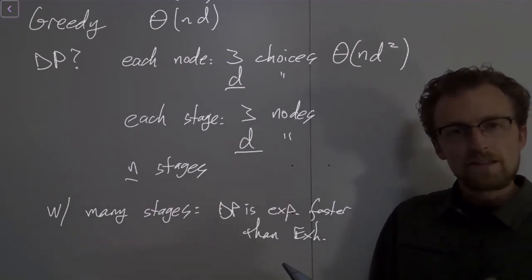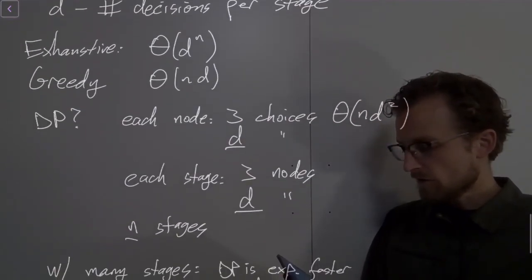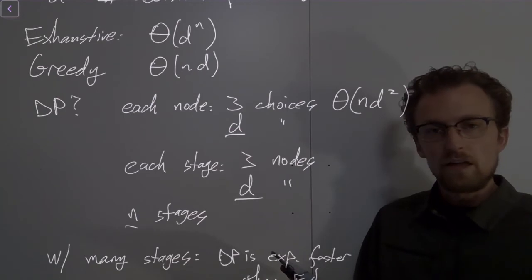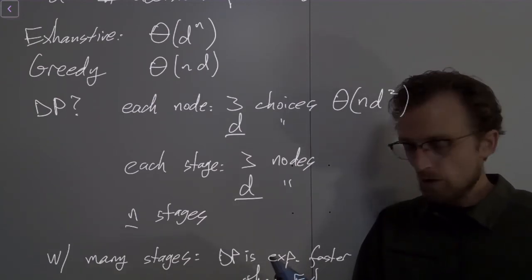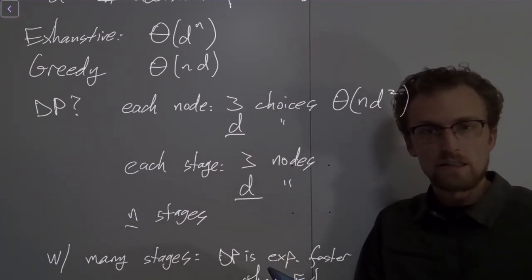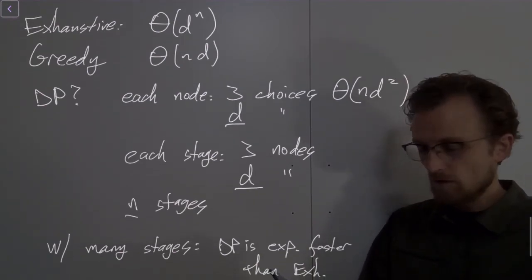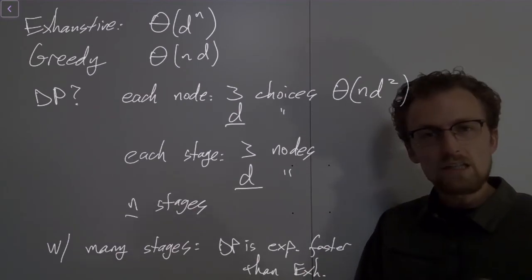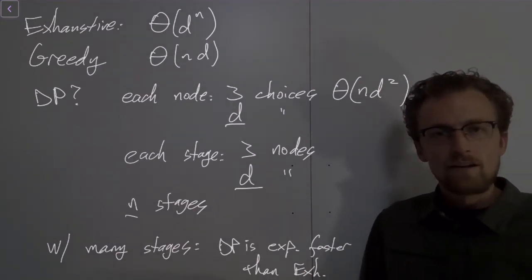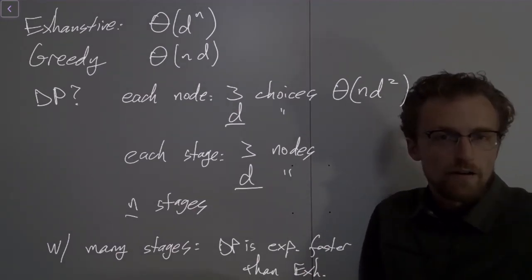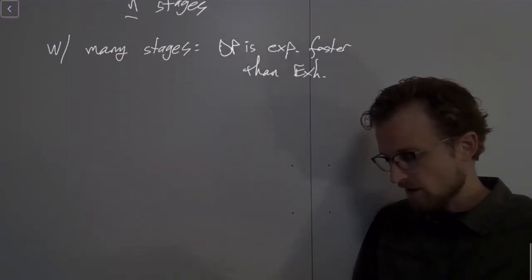And even with many decisions to make, even though exhaustive search is only polynomial in the number of decisions to make, you're still going to be faster in DP, as long as you have a large number of stages. So d to the power of a large n is going to dominate d squared, as long as n is large.